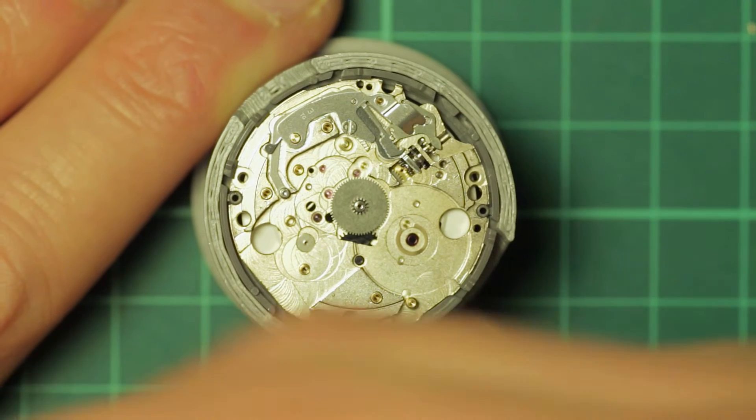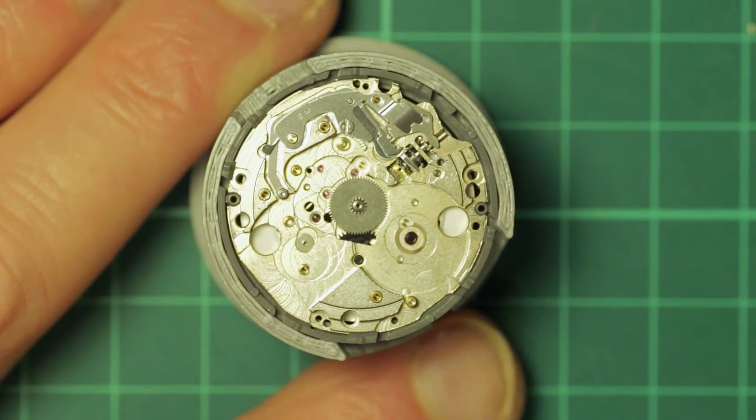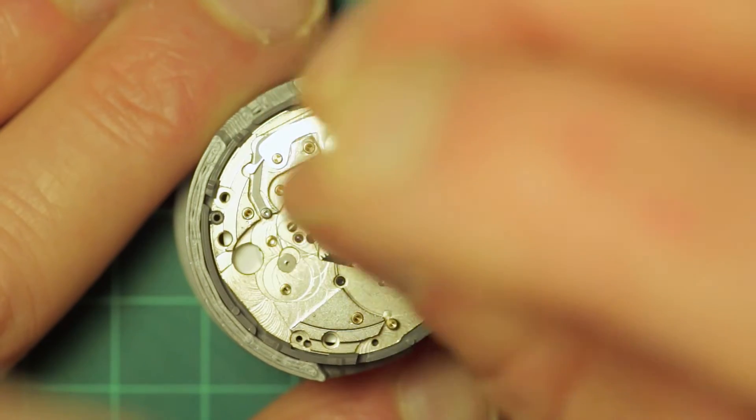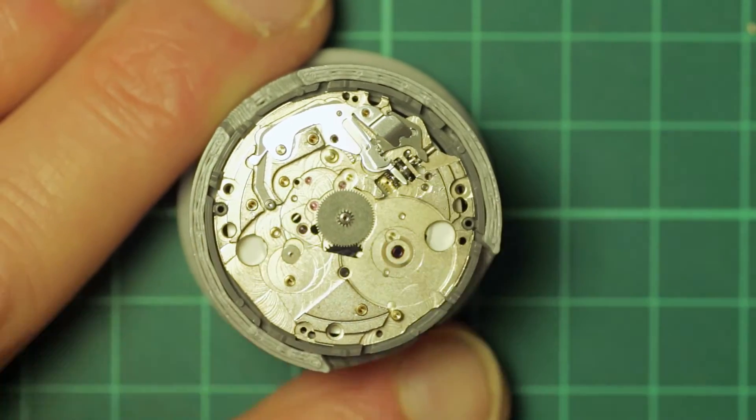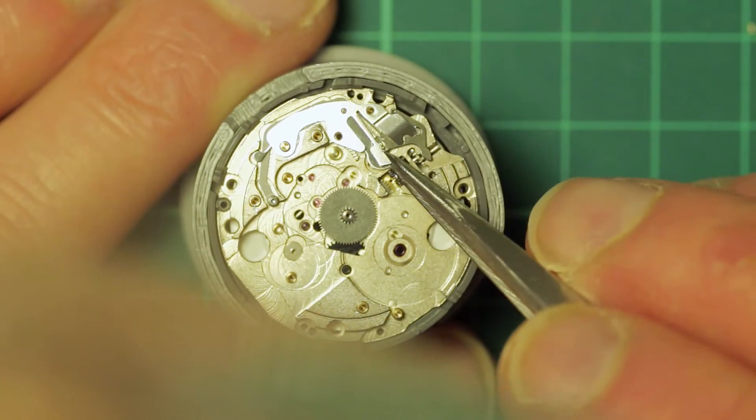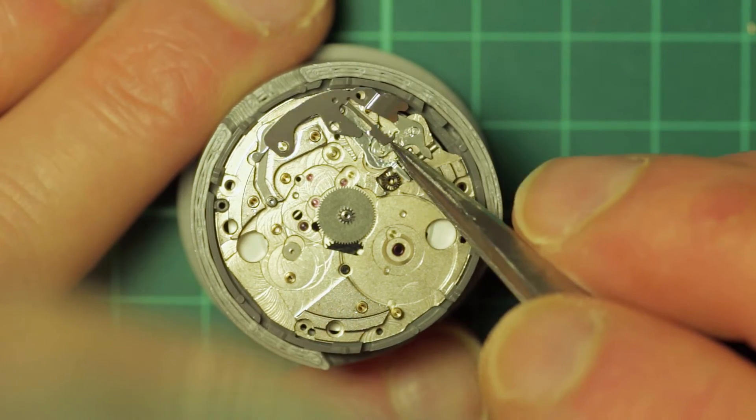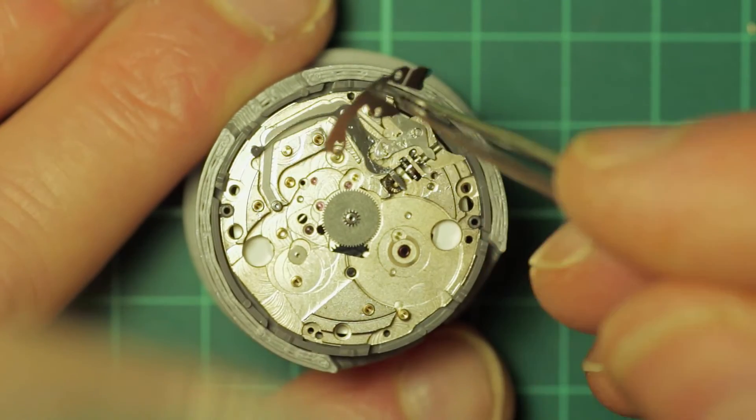We'll get to that momentarily. But here you can see the keyless works. Much like the 7S26, the keyless works are also on the movement side, the wheel train side rather than the dial side as you would conventionally see.